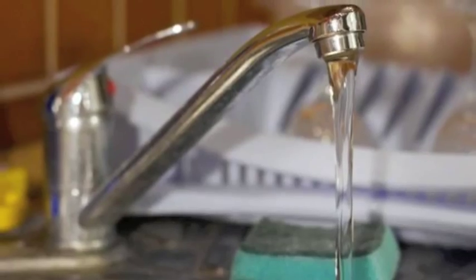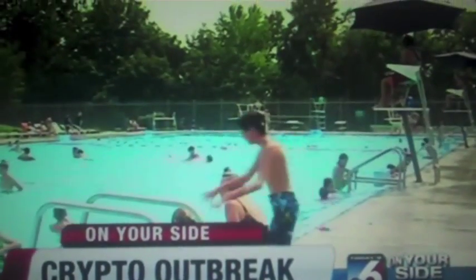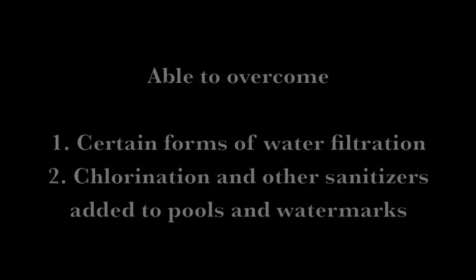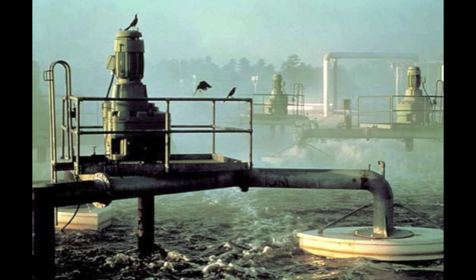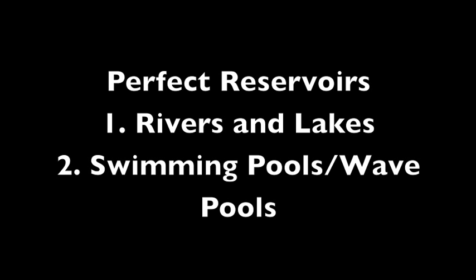This poses a problem, especially if water is filtered directly from an infected lake or river into homes. Humans also commonly contract crypto from swimming pools, wave pools, and public drinking sources such as water fountains or groundwater. The bacteria is able to overcome many forms of water filtration, chlorine, and other agents created to kill the parasite that are often seen in swimming pools. Because of its resistance, it is able to survive in semi-filtered drinking water and chlorination in pools, making those perfect reservoirs for human contraction.